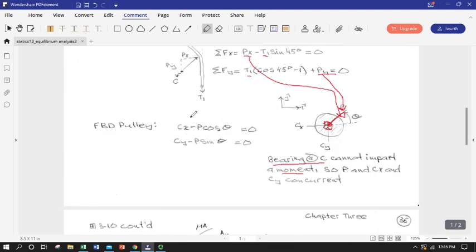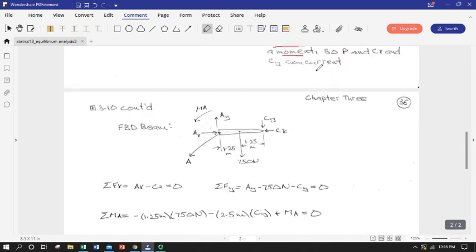So this will give us CX and CY because we already know P, P total. And we can use geometry to get the components of P that we care about. So we'll take CX and CY and apply them to an FBD of the beam itself.